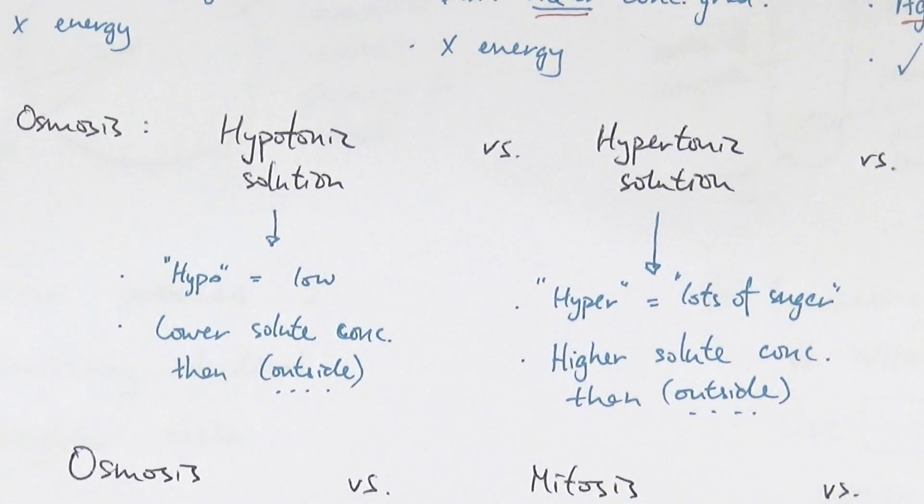More confusion comes in when it's about hypo and hypertonic solution. So if we start with hypertonic solution, if you describe someone as being very hyper and that usually means they're very energetic, and the reason why they would be energetic is because maybe they had a sugar rush. So they have just had a chocolate bar.